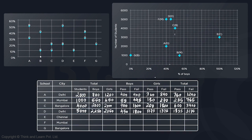School E is from Chennai with 3000 students, and it's an all-boys school — 100% boys, no girls. Boys passing percentage is 10%, so 300 boys passed and 2700 failed. Total passed: 300, total failed: 2700.